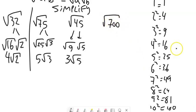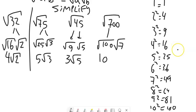Square root of 700: 100 is in there. 100 times 7. Square root of 100 is 10, so this is 10 root 7.